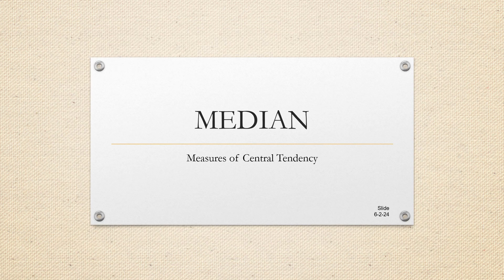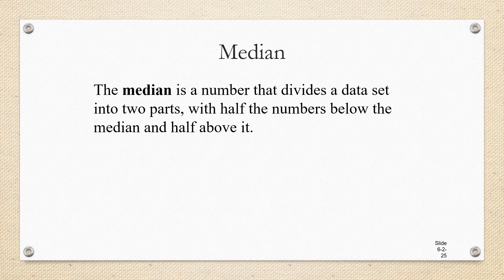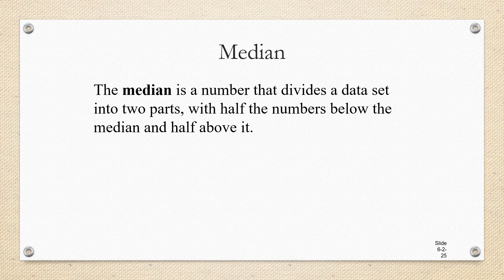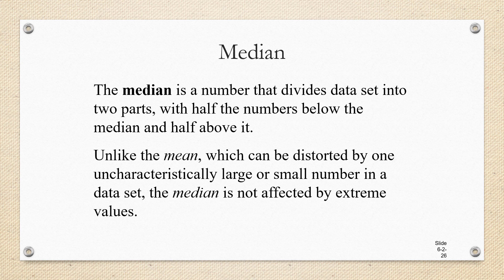Let's talk about the median. The median is a number that divides a data set into two parts, with half the numbers below the median and half above it. Unlike the mean, which can be distorted by one uncharacteristically large or small number in a data set, the median is not affected by extreme values.